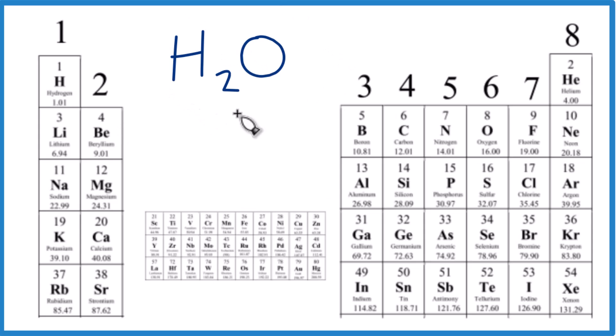So for water, hydrogen, group one, one valence electron. Oxygen, group 16, sometimes called 6a, six valence electrons. Total of two plus six, eight valence electrons.